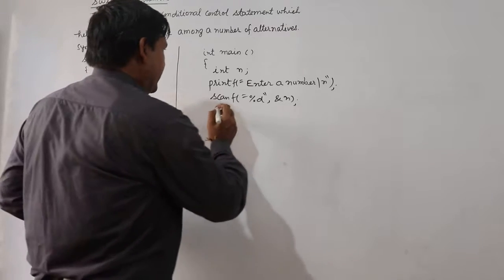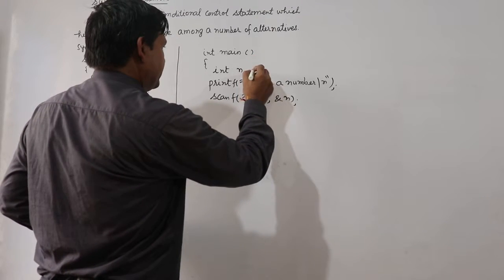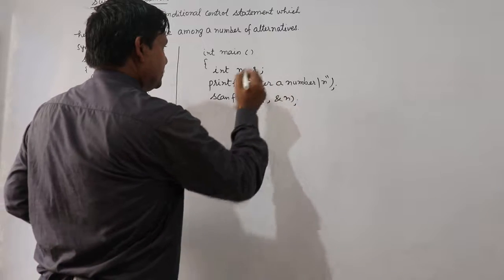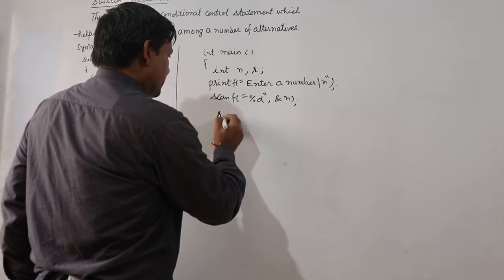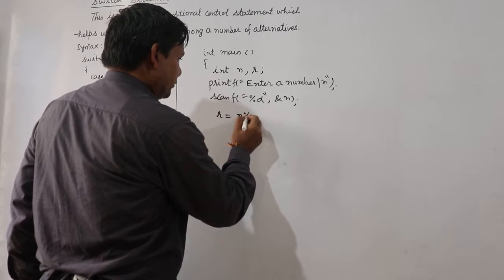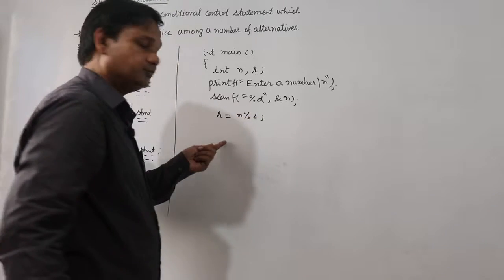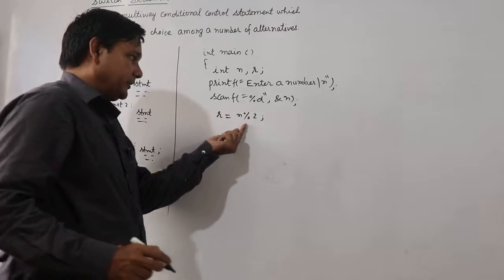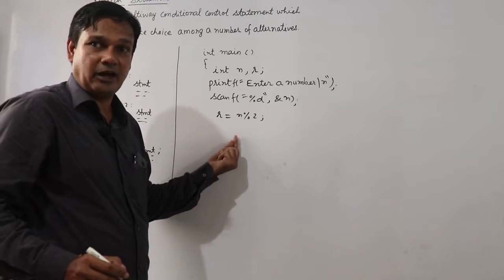Now I am finding its remainder. Then I am taking here one more variable r, r equal to n mod 2. Either 0 will be in r or 1 will be in r.